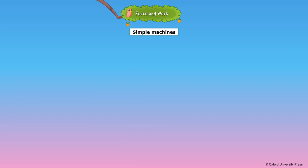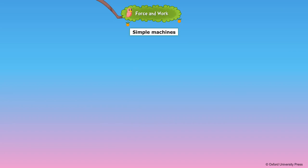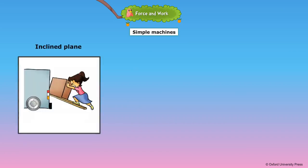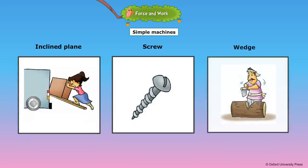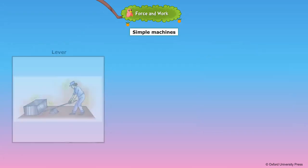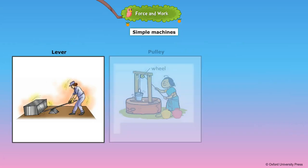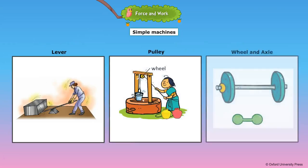Some machines are simple machines. They make life simple and are easy to handle. Examples are lever, inclined plane, screws, wedges, and so on. They serve various purposes such as lifting weight, tightening, and so on.